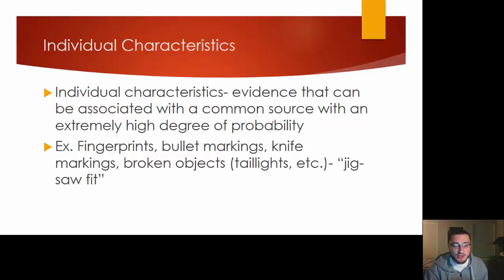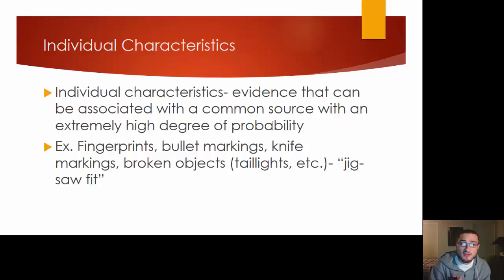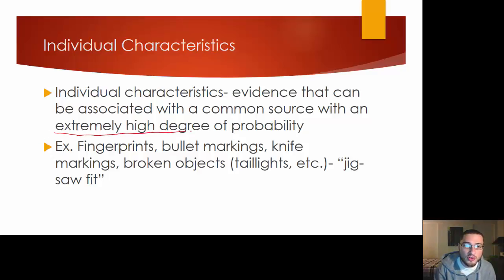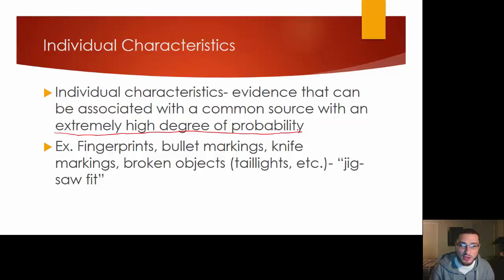A major overarching theme in this textbook and chapter is individual evidence versus class evidence. Individual evidence — or individual characteristics — is evidence that can be associated with a common source with an extremely high degree of probability. You want to know what that means. Fingerprints, bullet markings, knife markings, broken objects, DNA, and jigsaw fit are all individual evidence. Class evidence is evidence that can be associated with a group.